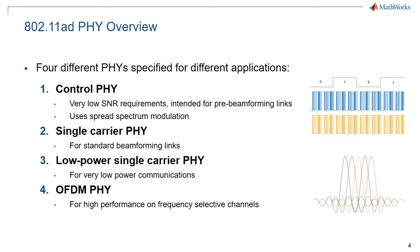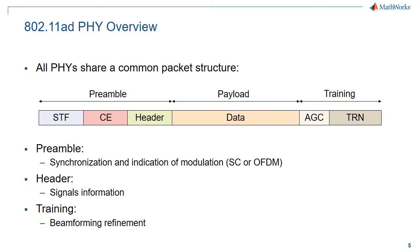802.11ad defines four different physical layers. The control PHY is used to set up links before beamforming has been established, and is designed to operate at very low SNRs. The single carrier PHY is used for general beamforming links. The low power PHY trades off coding gain for low power consumption. The OFDM PHY is designed for high throughput links in very frequency selective channels. All four PHY formats share a common packet structure.